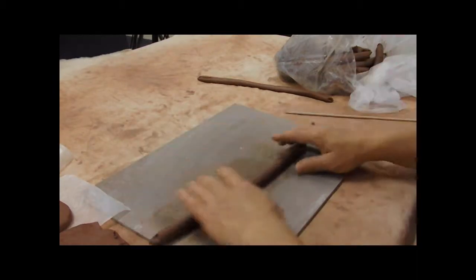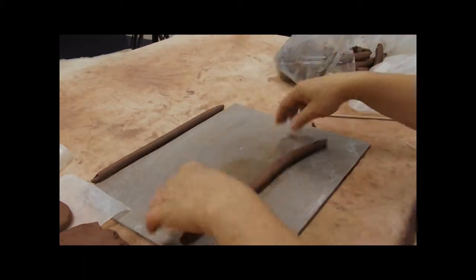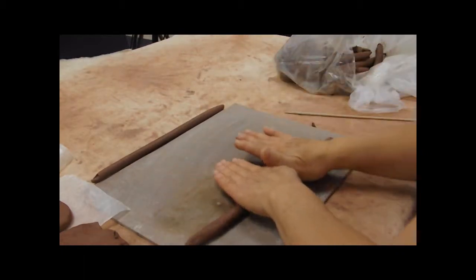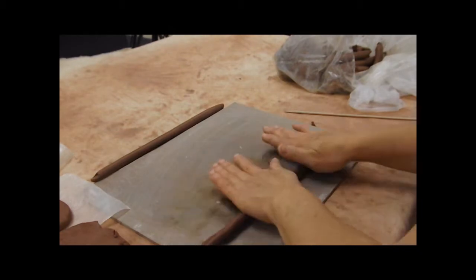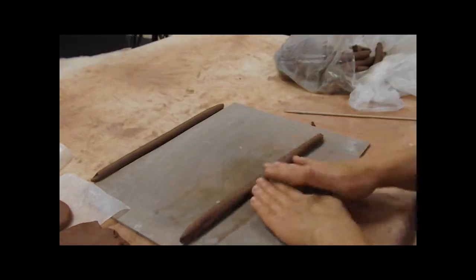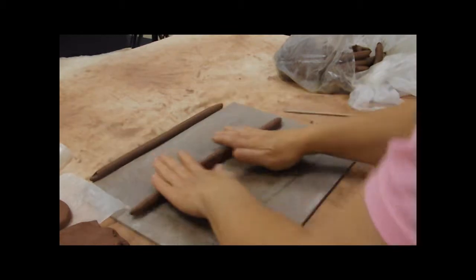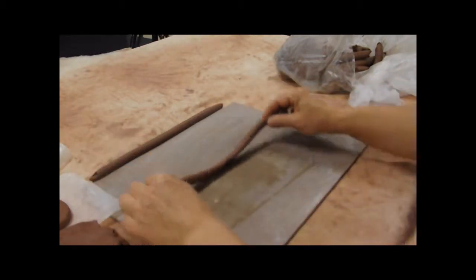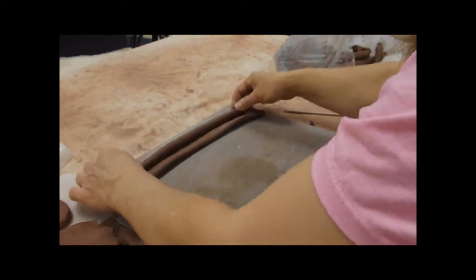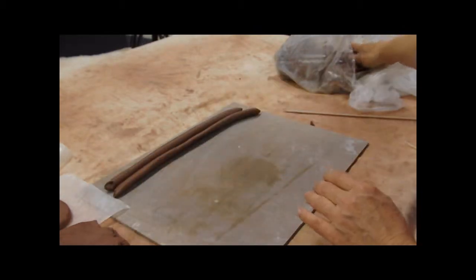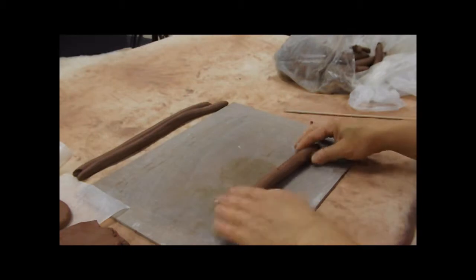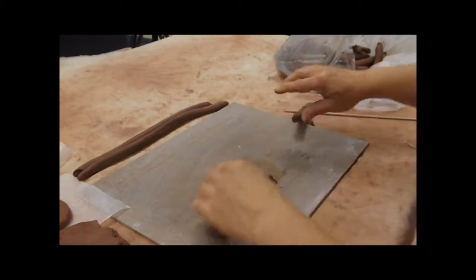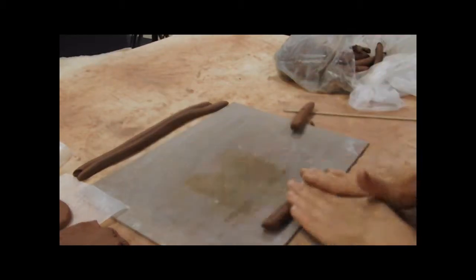Now, sometimes they'll get kind of floppy. This one's an example of a floppy one. So what I do is I just kind of press. And if they're floppy, that's okay. But you want them about the same size. So that's one that's, I'll do that again. You can always cut it in half like that and roll it.